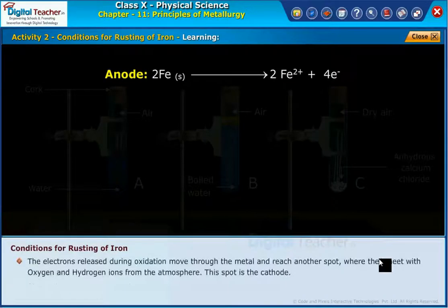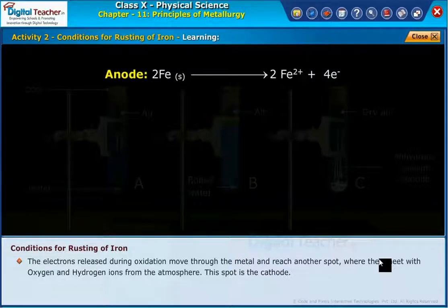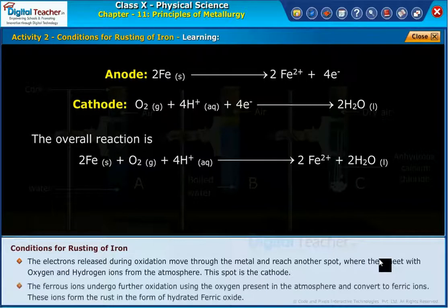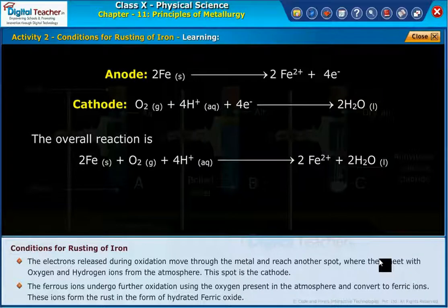The electrons released during oxidation move through the metal and reach another spot where they meet with oxygen and hydrogen ions from the atmosphere. This spot is the cathode. The ferrous ions undergo further oxidation using the oxygen present in the atmosphere and convert to ferric ions. These ions form the rust in the form of hydrated ferric oxide.